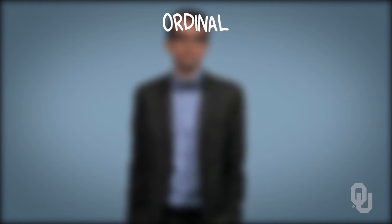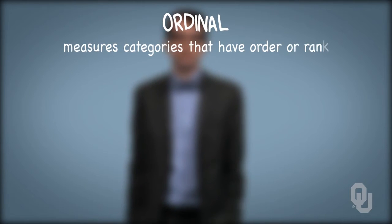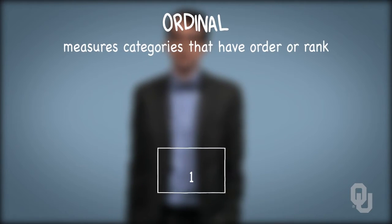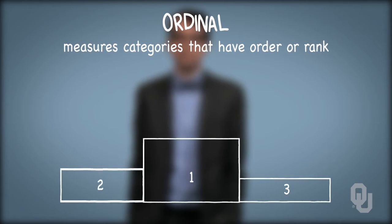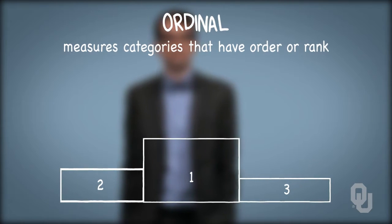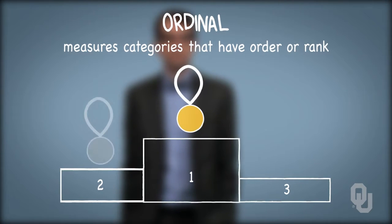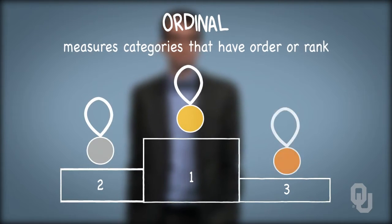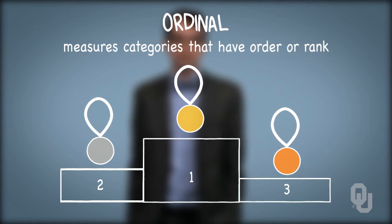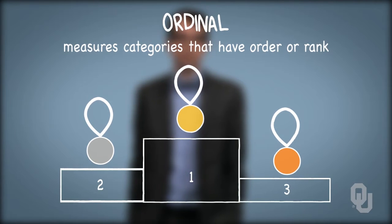The ordinal scale measures categories that have an implied order or rank. A non-numeric example would be the medals awarded during the Olympics: gold, silver, and bronze. These are categories, but there is an order implied, as a gold medal signifies a better performance relative to silver and likewise bronze.